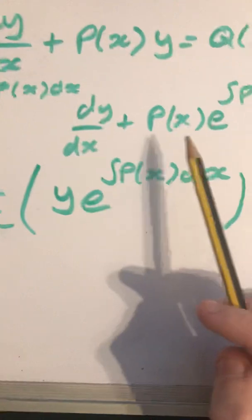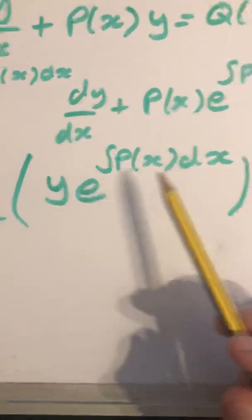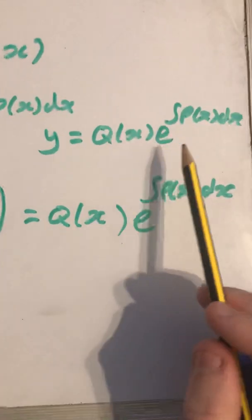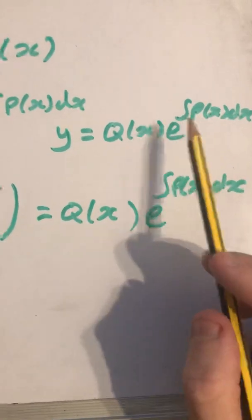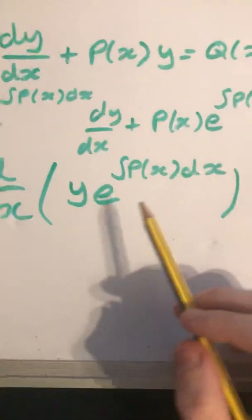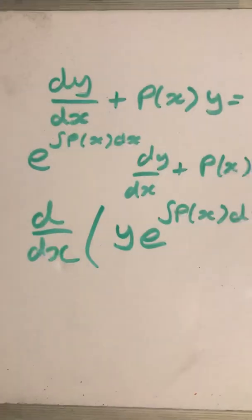So you can see once we get into this form, we can write this here, and then we have Q(x) times e to the integral of p(x) dx, and then we can integrate both sides and solve for y.